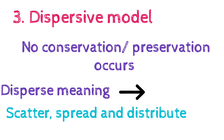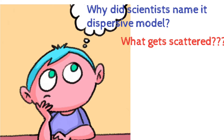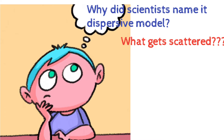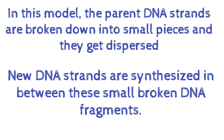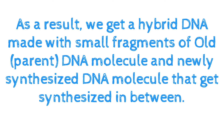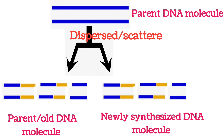The third model is the dispersive model. According to this hypothetical model, the DNA to be replicated is not conserved — instead, dispersion occurs. To disperse means to scatter, spread, and distribute. According to this model, the DNA to be replicated is broken down into small pieces, these small pieces get dispersed, and new fragments are synthesized in between the scattered and dispersed fragments. This dispersion occurs randomly.